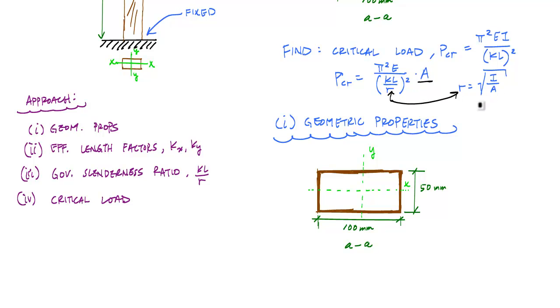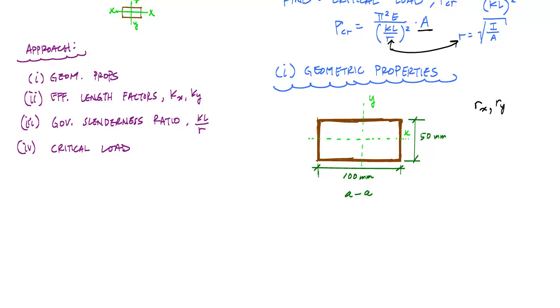This radius of gyration here, this R, and I need it about both axes because I have a moment of inertia about the x. I have a moment of inertia about the y. So I'm going to have a radius of gyration, Rx and Ry as well. So the first things first, let's go ahead and determine the area of this, which is a pretty simple area. Base times height, and that's going to be 5,000 millimeters squared.